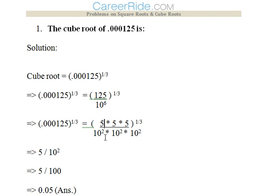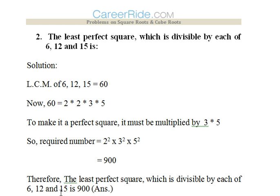Second question: the least perfect square which is divisible by each of 6, 12 and 15. Now LCM can be found out straight away, so 6, 12, and 15 gives the LCM as 60 that is 2 into 2 into 3 into 5. To make it a perfect square what we need to do is multiply it by 3 and 5. So it would be 900. So the least perfect square which is divisible by each of 6, 12 and 15 would be 900.